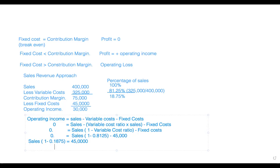So we get $240,000 in sales. Based on this information, the Wheatier company must earn revenue of around $240,000 in order to break even. This is the calculation of the break-even point from the sales revenue perspective. We can also use the formula: break-even sales equals fixed cost divided by the contribution margin ratio, which also gives $240,000.